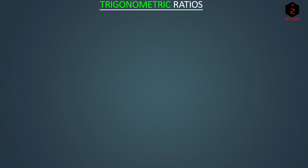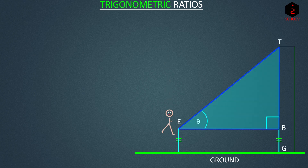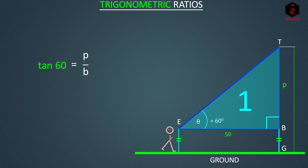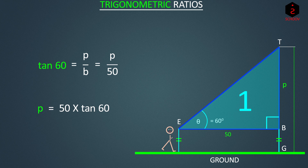So how does all this help us? Let's pick the example from the first topic, where we had to find the height of a structure. In our right-angled triangle, if theta equals 60 degrees and the horizontal distance is 50, with the vertical length being P, we can say that tan 60 = perpendicular/base = P/50. So P equals 50 × tan 60. We can use the knowledge of trigonometric ratios to find the value of P — if only we know the value of tan 60, which we will learn next.